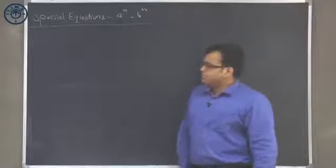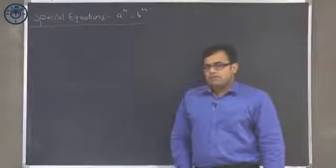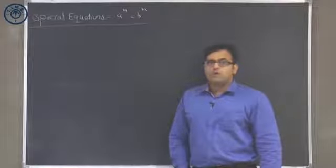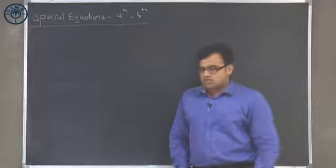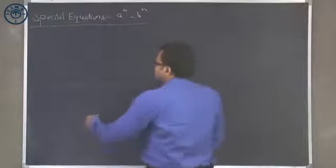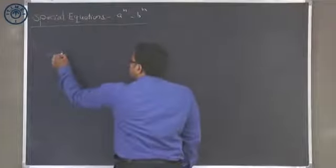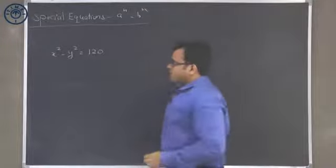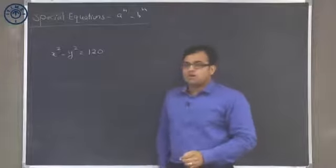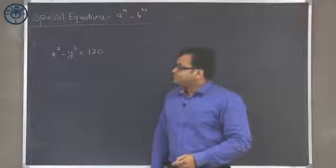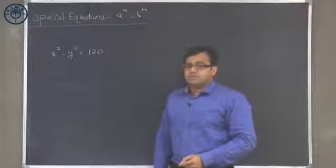Hello friends, in this session we will talk about yet another application of special equations. We are going to look at a to the power n minus b to the power n equals some constant c. Let us take an example: we have x squared minus y squared equals 120. How many positive integral solutions will there be?